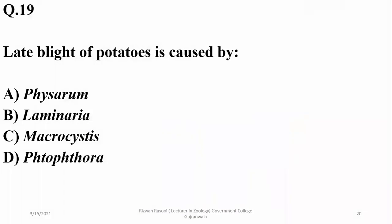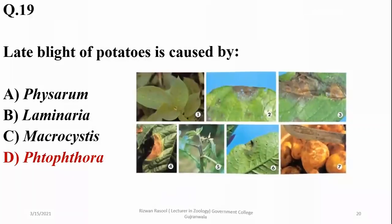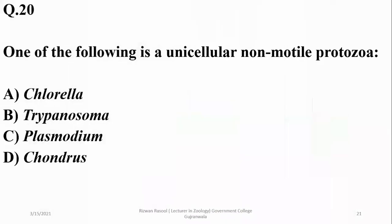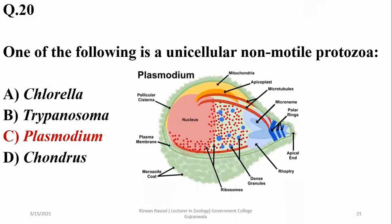Coral reefs are formed due to dead corals as well as red algae, so option D is correct. Late blight of potatoes is caused by Phytophthora infestans. Which of the following is a unicellular non-motile protozoan? That is Plasmodium, so option C is the right answer.